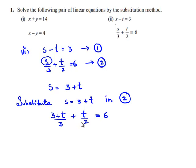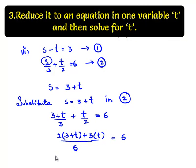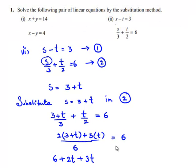We know that the LCM of 3 and 2 is 6. Here we get 2 times 3 plus t plus 3 times t. This equals 6, and this becomes 6 plus 2t plus 3t on cross multiplication. 6 goes to the right hand side and becomes 6 multiplied by 6.